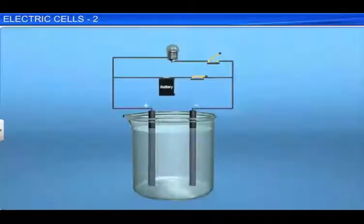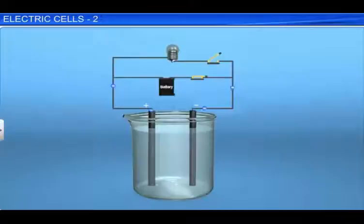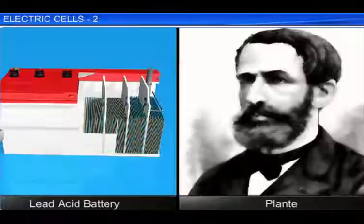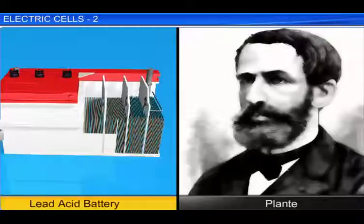The chemical reaction is reversible in the case of secondary cells. Thus, a secondary cell can be recharged and reused. The lead-acid battery, the nickel-iron cell, and the nickel-cadmium cell are some examples of secondary cells. The lead-acid battery, the oldest rechargeable battery, was invented by French physicist Planté in 1859.